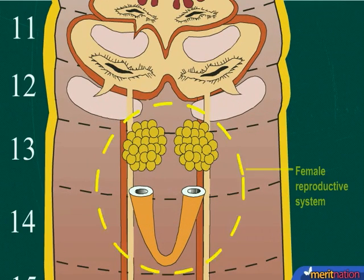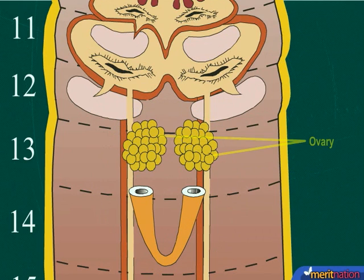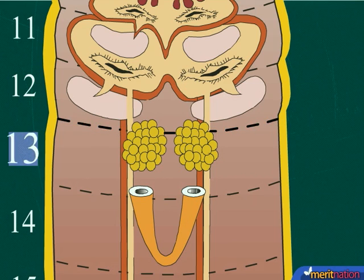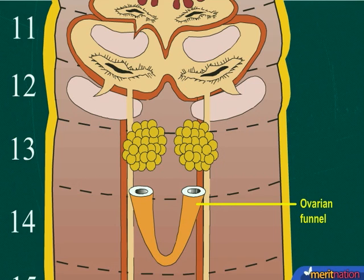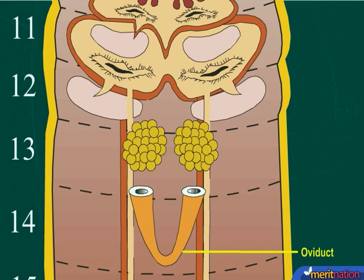Let us first take the female reproductive system. It mainly consists of a pair of ovaries present in the intersegmental septum of the 12th and 13th segment. The ovaries are followed by an ovarian funnel which extends into the oviduct, and this opens on the ventral side of the 14th segment as the female genital opening.